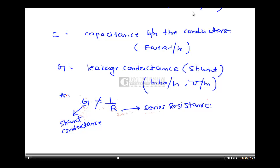Now it is very clear that the basic elements of a transmission line are R, L, G, and C. R and L arise because of the series conductors, whereas C and G arise because the two wires are separated by a distance. C is a shunt capacitor and G is a shunt conductor. These are the basic elements of a transmission line.